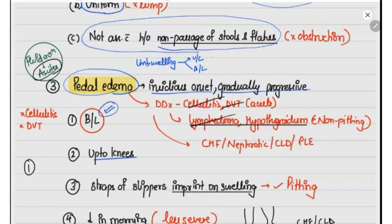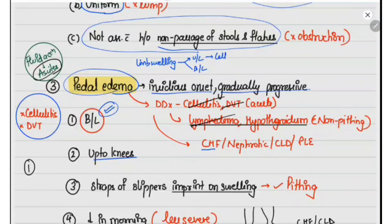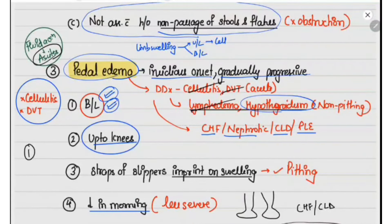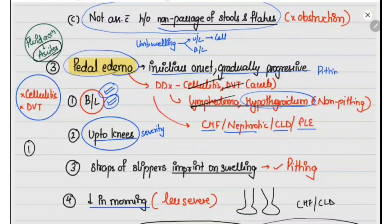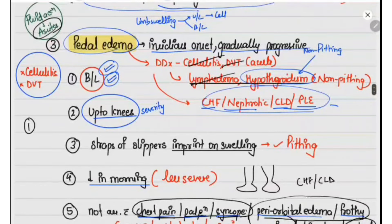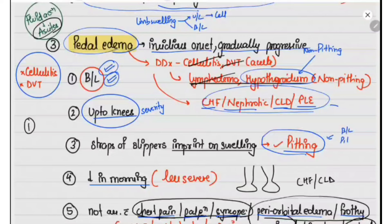In this case the edema is bilateral. Causes like cellulitis and DVT are usually unilateral, whereas causes like congestive heart failure, nephrotic syndrome, CLD, protein-losing enteropathy, malnutrition, and hypothyroidism are usually bilateral. We also need to know the extent to assess severity. Next, we need to determine whether it is pitting or non-pitting, because in hypothyroidism it will be non-pitting, whereas in the other causes it will be pitting. We ask about pitting by checking whether the straps of slippers are imprinted on the swelling — as in this case — confirming bilateral pitting edema.